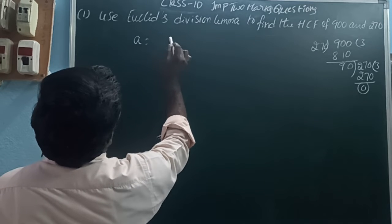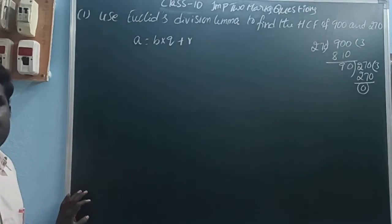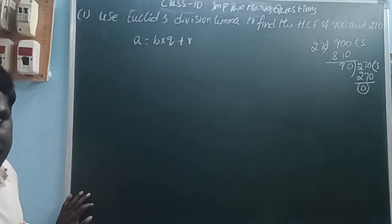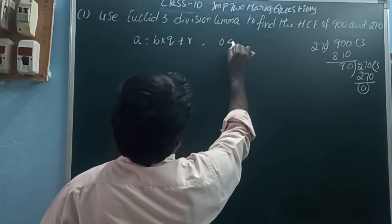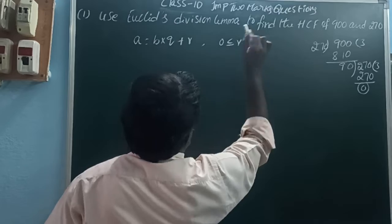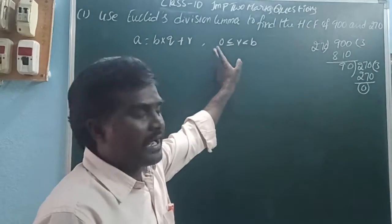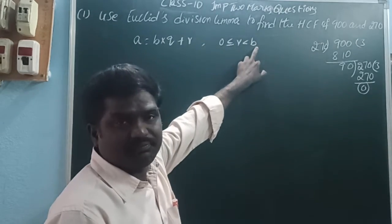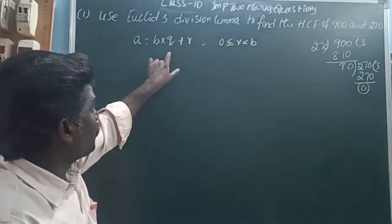So here, we are asked to use Euclid's division lemma. Euclid's division lemma states a = b × q + r, where the remainder condition is 0 ≤ r < b. That means the remainder is greater than or equal to 0 and less than the divisor. Here, a is the dividend, b is the divisor, q is the quotient, and r is the remainder.